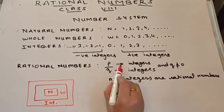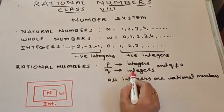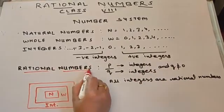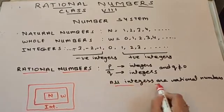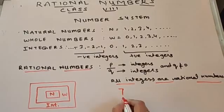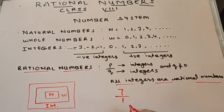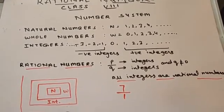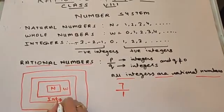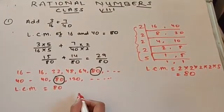Any number which can be represented in the form of P upon Q, where P and Q are integers and Q is not equal to 0, are rational numbers. All integers are rational numbers — because 7 is an integer, we can write it in the form of P by Q by writing 1 as a denominator. So rational numbers cover all integers, and this part also covers fractions. Once the concept is clear, it is very easy to solve.